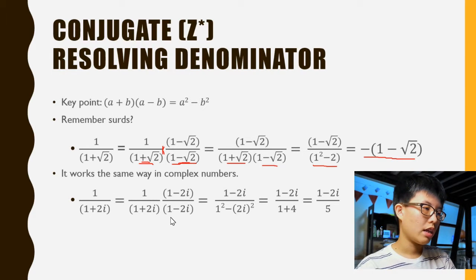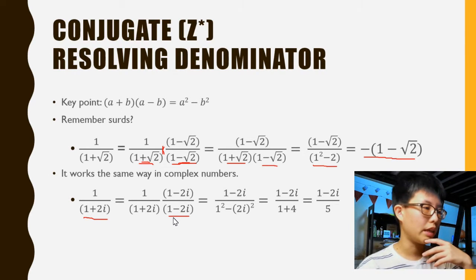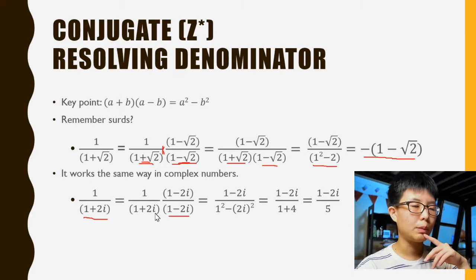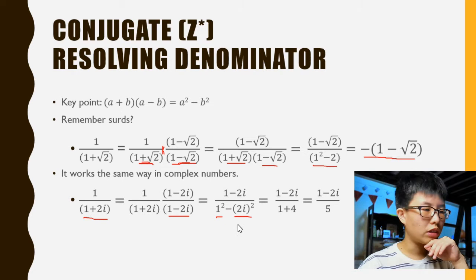Here we have 1 + 2i in the denominator. From 1 + 2i, we have the conjugate which is 1 - 2i. Multiply that top and bottom. If you look at everything in the denominator, it's an (a + b)(a - b) thing, so we get a² - b².